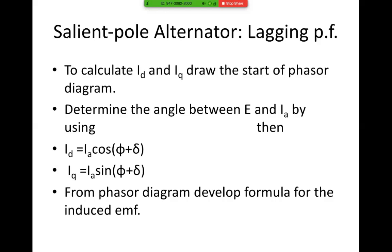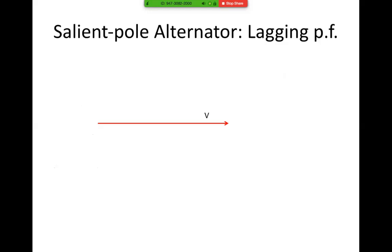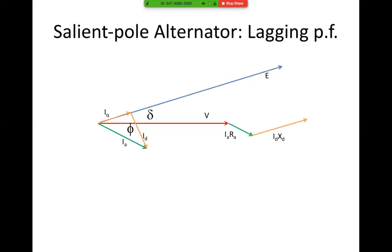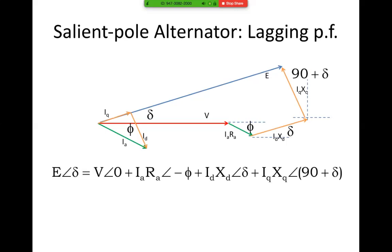From the phasor diagram we develop the formula for the induced EMF of the salient pole alternator. Here we have Ia and delta. IQ is co-phasal with E, and ID is perpendicular to E. Then we get the voltage drop IaRa, ID·XD which is parallel to E, and IQ·XQ which is perpendicular. That gives the angle phi, angle delta, and angle 90 plus delta. So the equation is: E angle delta equals V angle zero plus IaRa at angle minus phi, plus ID·XD angle delta, plus IQ·XQ angle 90 plus delta.